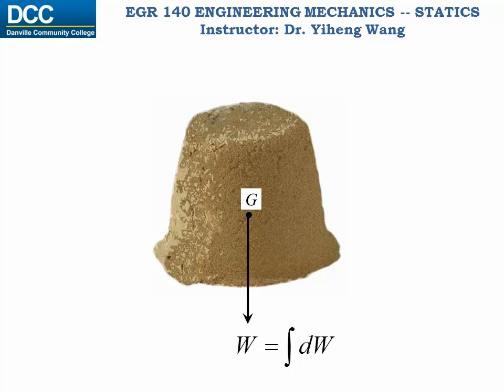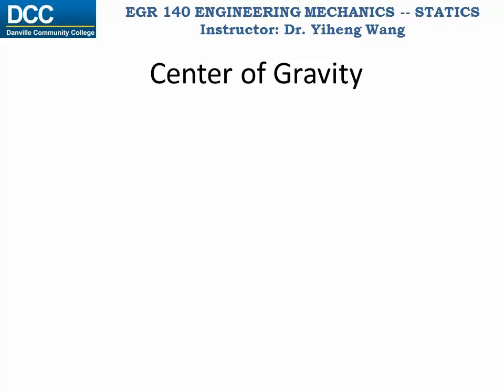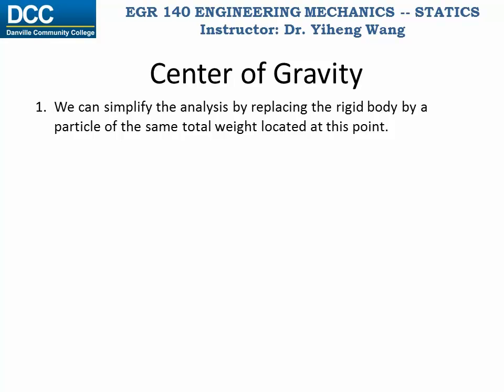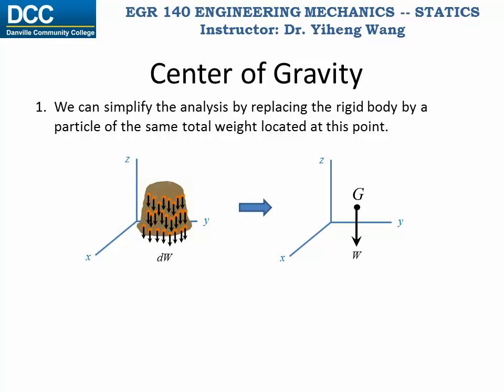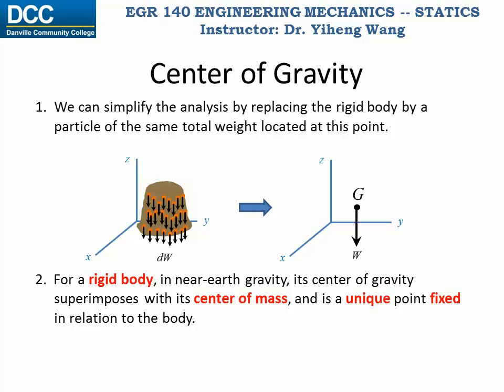The total moment of the original distributed load summarized about any axis passing through this point is zero. So why do we want to find the center of gravity? If we do know its location, in some cases it is convenient for us to replace a rigid body by a particle located at this point. For a rigid body in a general near-Earth situation, when the gravitational acceleration g can be considered constant at about 9.81 m/s², the center of gravity is the same point as the center of mass. It is a unique point fixed in relation to the body, meaning if you move the body around or rotate it, the center of gravity stays at the same point relative to the body.